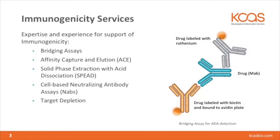The most commonly used format for the support of immunogenicity is the bridging assay. The assay that we perform here at KCAS utilizes the mesoscale discovery platform. This assay uses the drug itself to pull out the anti-drug antibody from the sample. That is done by typically biotinylating the drug and then adding a ruthenium label to the drug, and therefore it forms a bridge when the antibody binds to each of those respective labeled drugs. Then you add it to an avidin plate, it adheres to the plate, and you can get a signal.